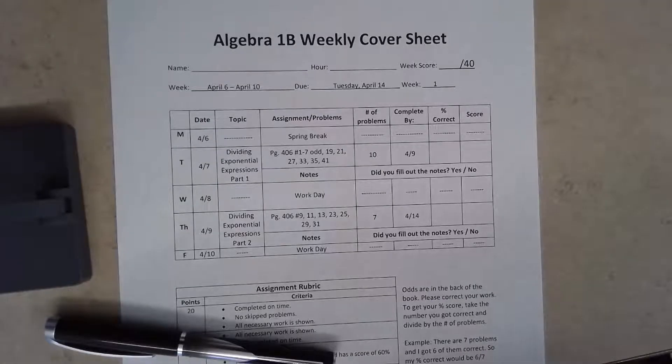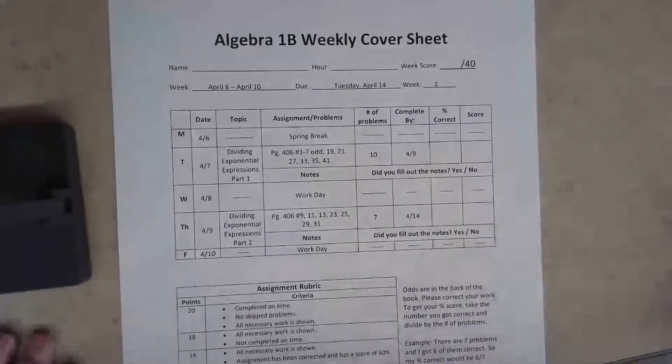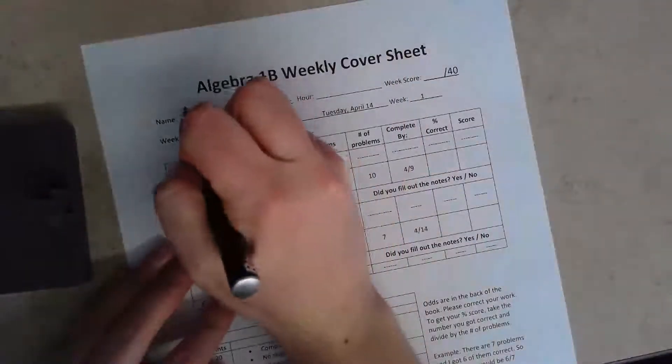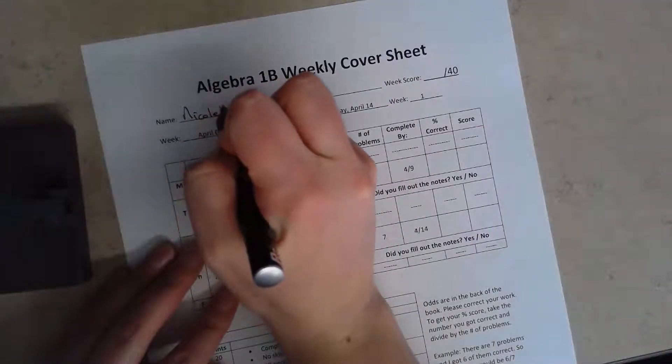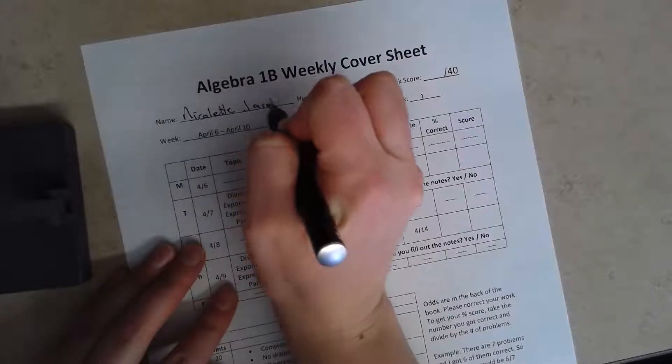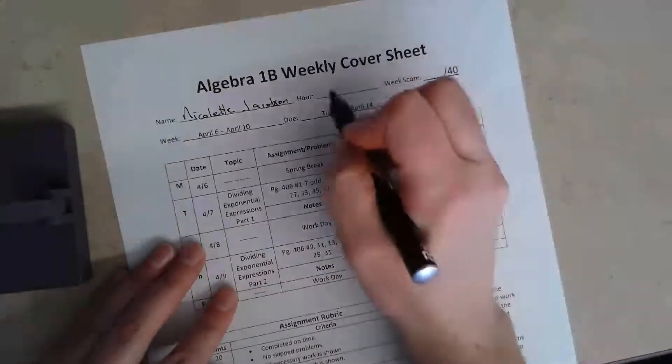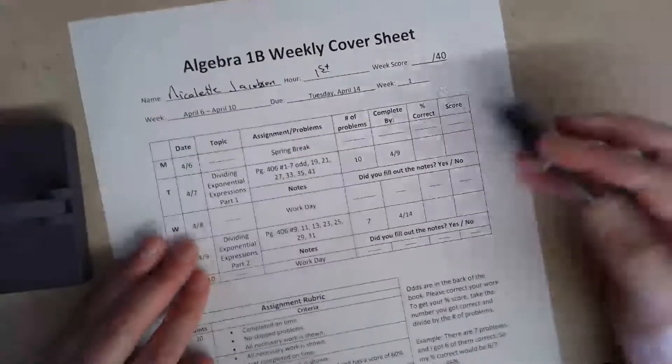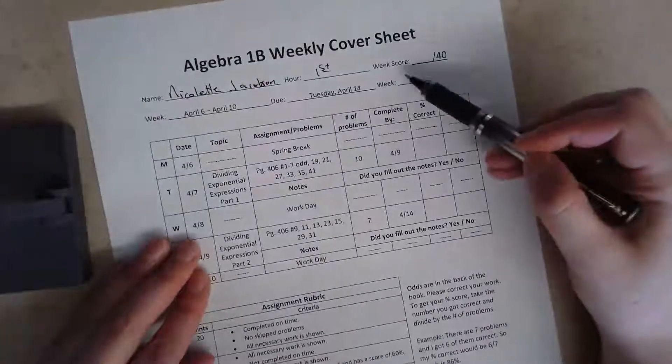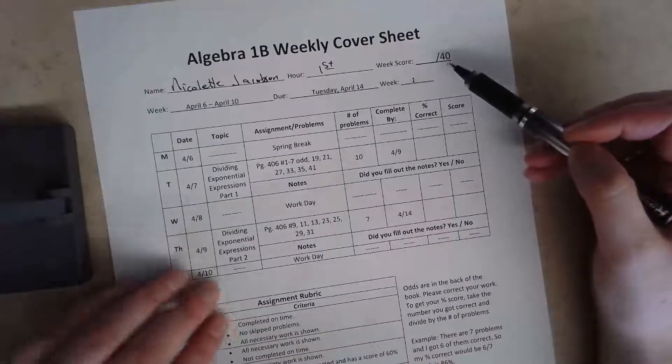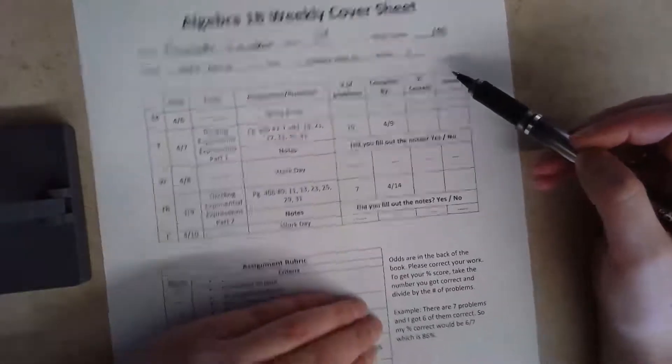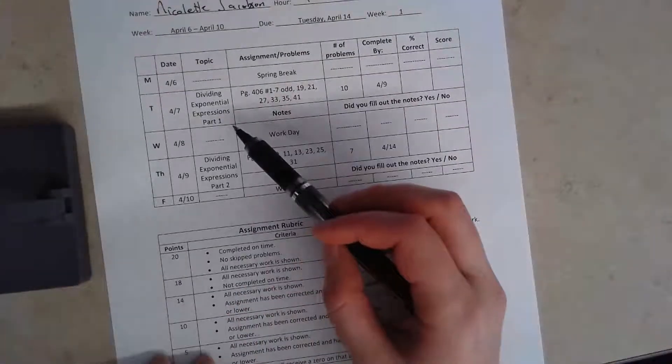So with these, what you'll do is first thing you need to do is, once after you've printed it, you put your name, your hour, and then right here is where your score is going to go. I don't know my score yet.